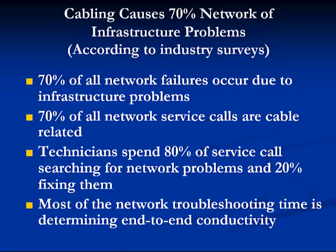It is also very important to note that 70% of all network failures occur due to infrastructure problems. Of anything we talked about in this first module, please keep that in mind — you're all going to be network specialists. Again, 70% of all network failures occur due to infrastructure problems, so please focus on network cabling as you learn about networks. Also, 70% of all network service calls are cable related. And technicians spend 80% of service calls searching for network problems and 20% actually fixing them. Most of the network troubleshooting time is determining end-to-end conductivity.